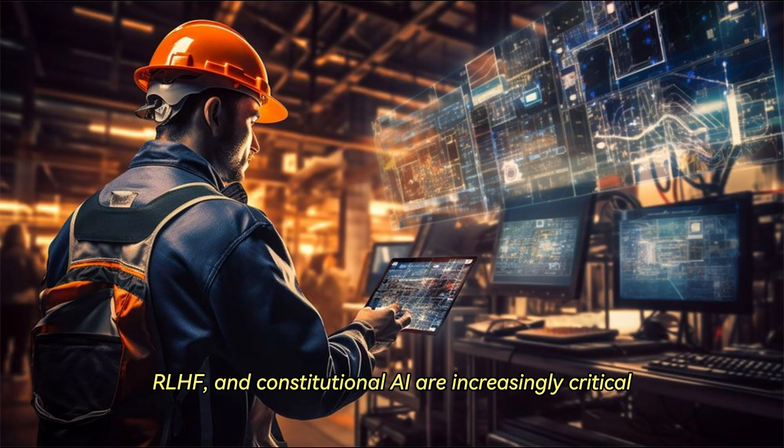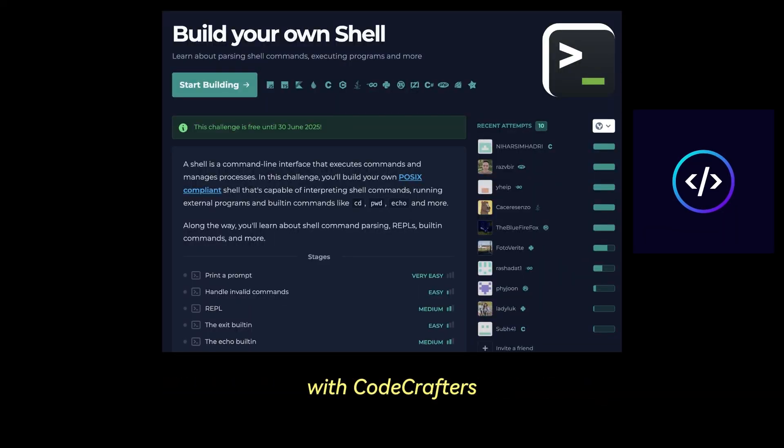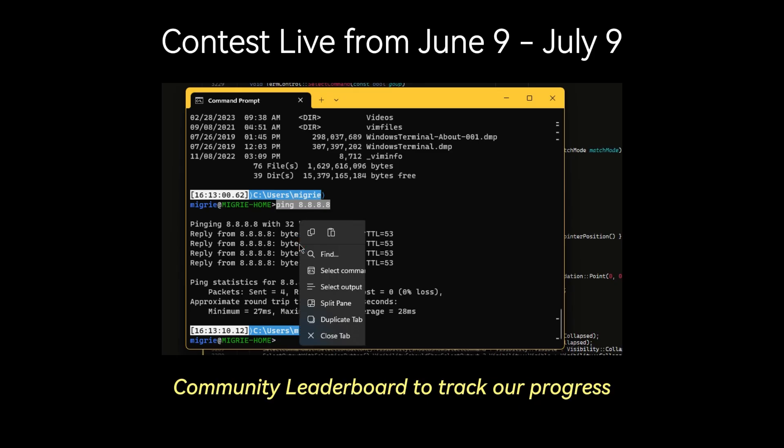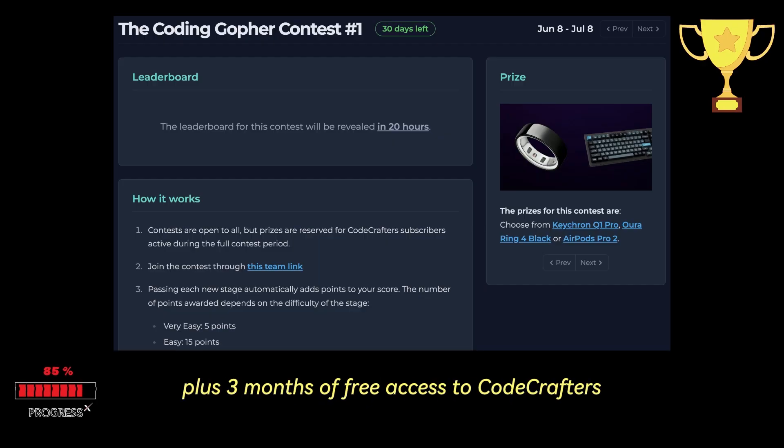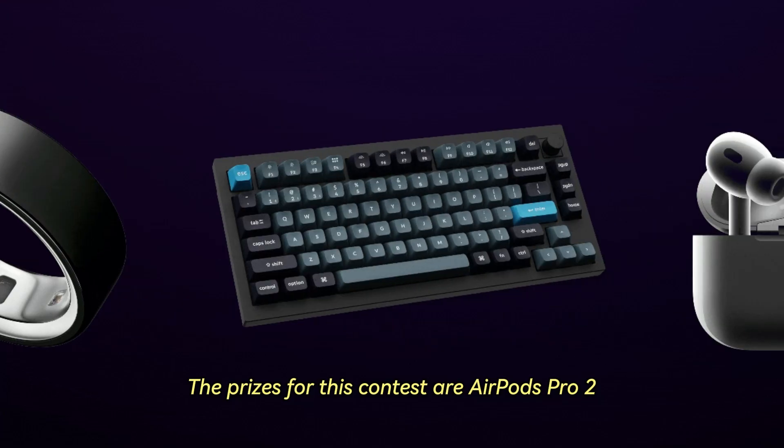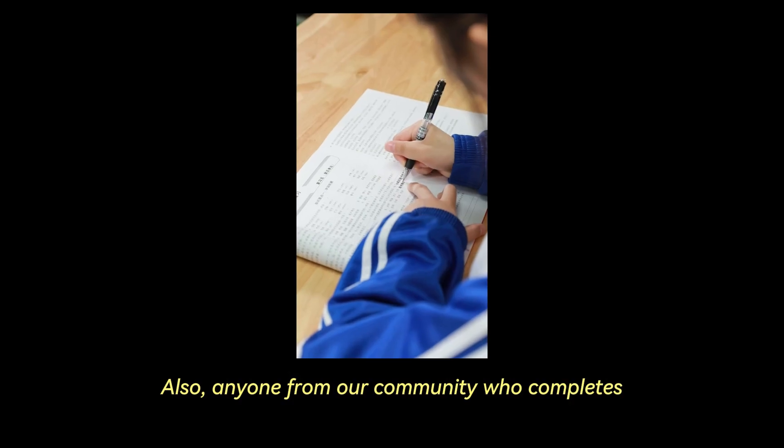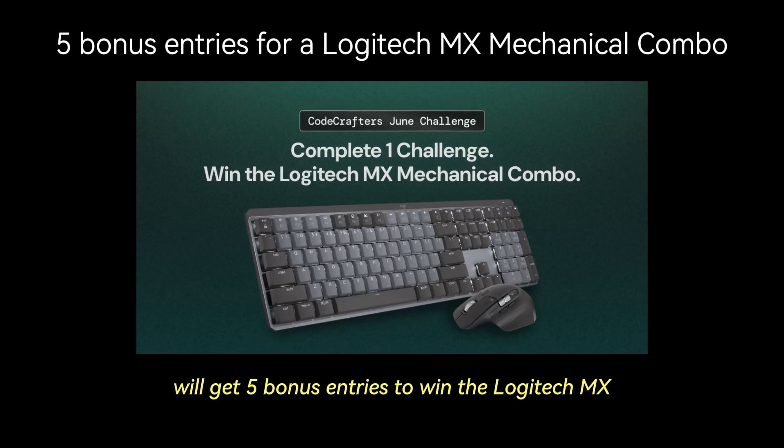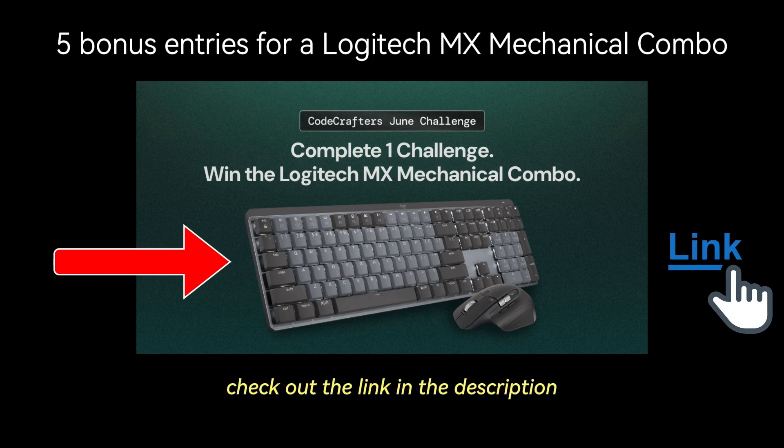I'm excited to announce a special opportunity for our community this June. We're hosting a Build Your Own Shell Challenge with CodeCrafters. For the entire month of June, you can take on this challenge for free. We'll have our own Coding Gopher Community Leaderboard to track our progress, and we'll be giving a special prize to the top finisher, plus three months of free access to CodeCrafters. The prizes for this contest are AirPods Pro 2, an Aura Ring 4 Black, or a Kikron Q1 Pro. Also, anyone from our community who completes any CodeCrafters challenge in June will get five bonus entries to win the Logitech MX Mechanical Combo Giveaway, so if you're ready to build, check out the link in the description.